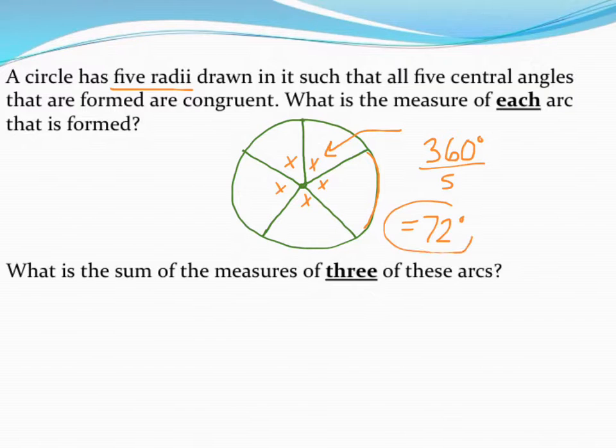Now, that not only tells me that the angles, the central angles, are 72 degrees, it also tells me these arcs out here are 72 degrees. The next question says, what's the sum of three of these arcs?